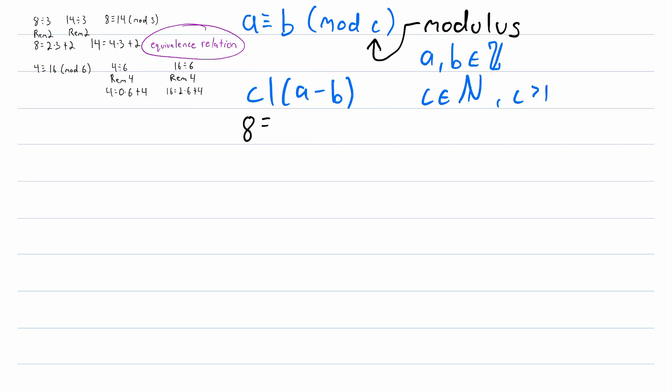We already said that 8 is congruent to 14 mod 3. Then 3, which is our c value, should divide 8 minus 14, which are our a and b values respectively. So is that true? Well 8 minus 14 is equal to negative 6, and indeed 3 does divide negative 6, because negative 6 is an integer multiple of 3. We can see that because negative 6 is equal to 3 times negative 2.